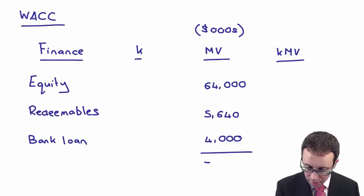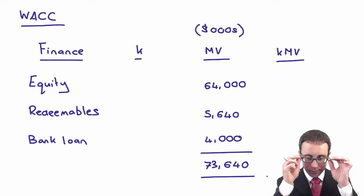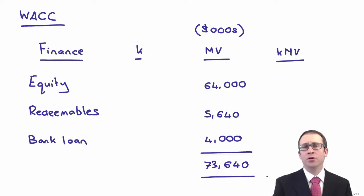I think if you tap that on your calculator, that gives you 64,000. And I can put the 64,000 there for my equity. Total that up, I think it gives me 73,640. Not too bad.